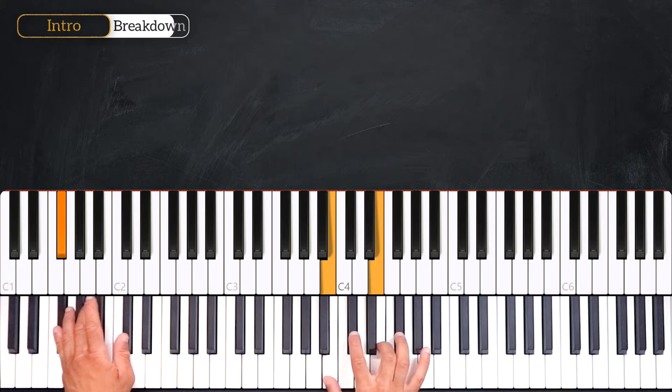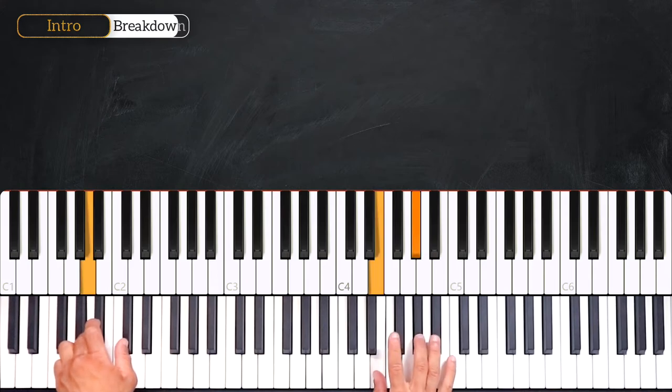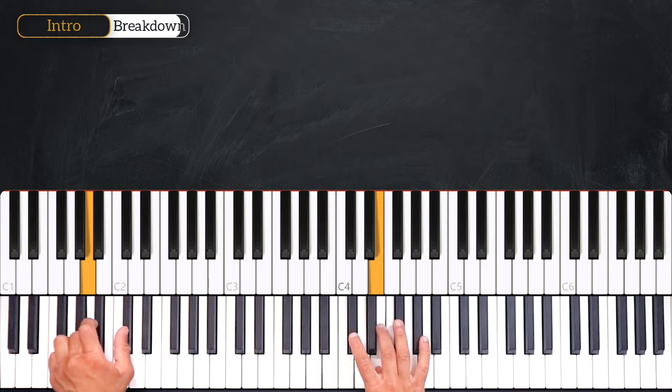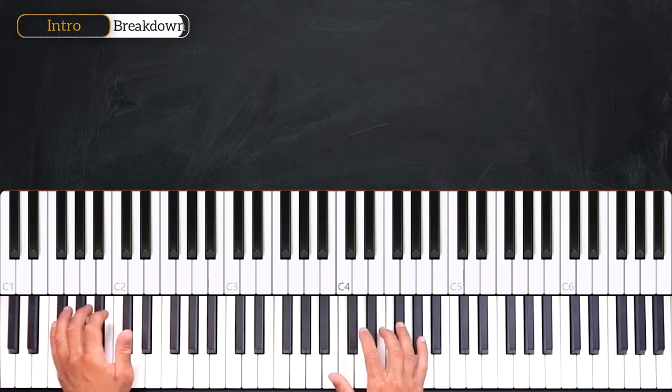Then we'll play C-sharp on the right hand into the A major 7, playing the right hand twice. And then we'll play both C-sharp on the left and right hand together into the pattern.